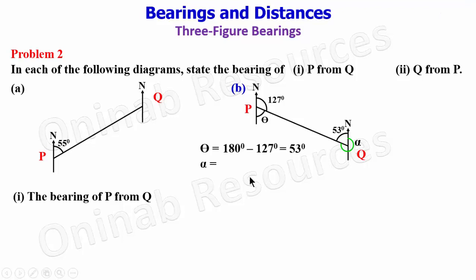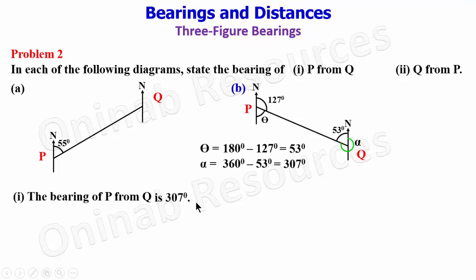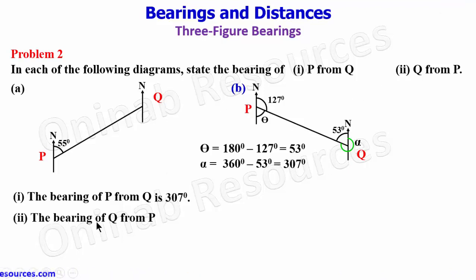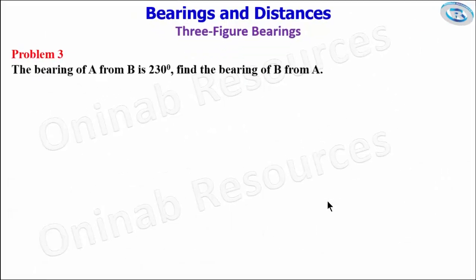Since the angle of a revolution is 360 degrees, alpha equals 360 degrees minus 53 degrees, which gives 307 degrees. So the bearing of P from Q is 307 degrees. For the second part — the bearing of Q from P — from P we move from the north and go clockwise until we get to the line joining P and Q, and that angle is 127 degrees. Therefore the bearing of Q from P is 127 degrees.